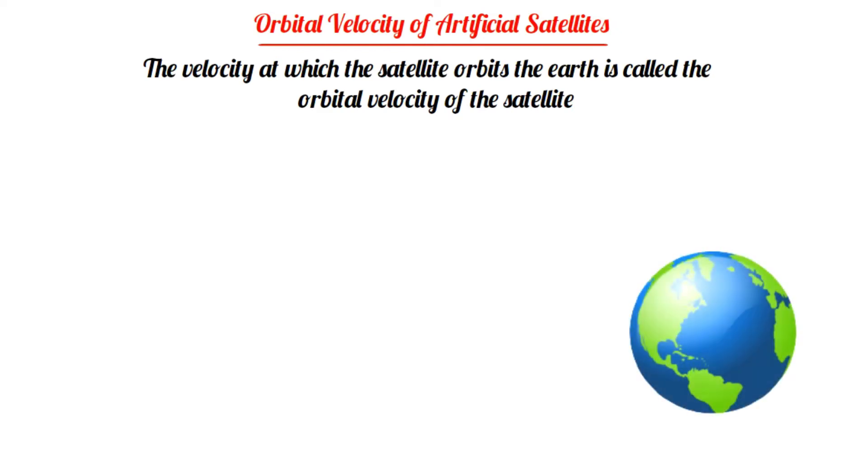So let us consider the mass of the Earth as capital M, the radius of Earth capital R, the mass of the artificial satellite as small m, the orbital velocity of the satellite as small v, and the height of the orbit from the surface of Earth as small h.